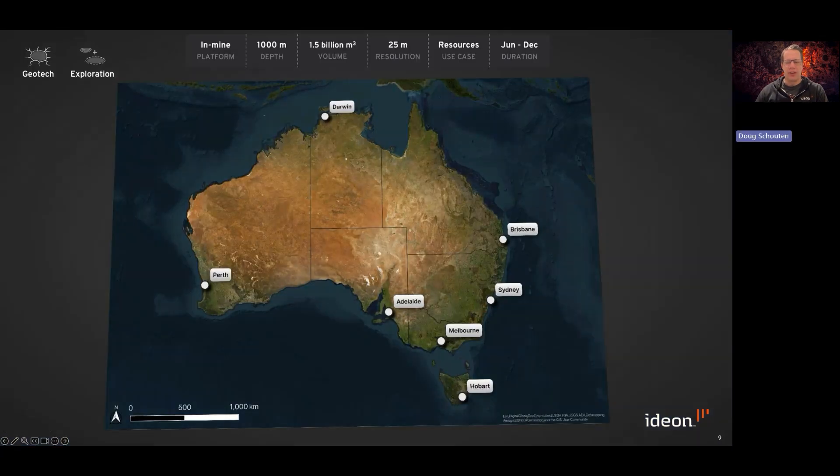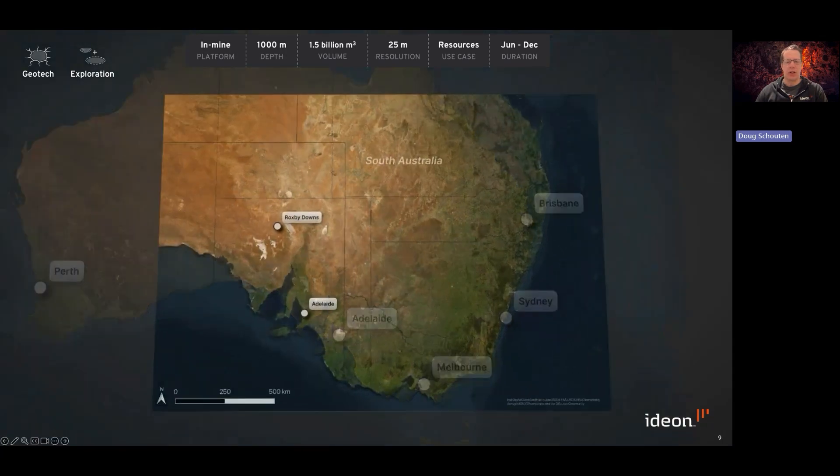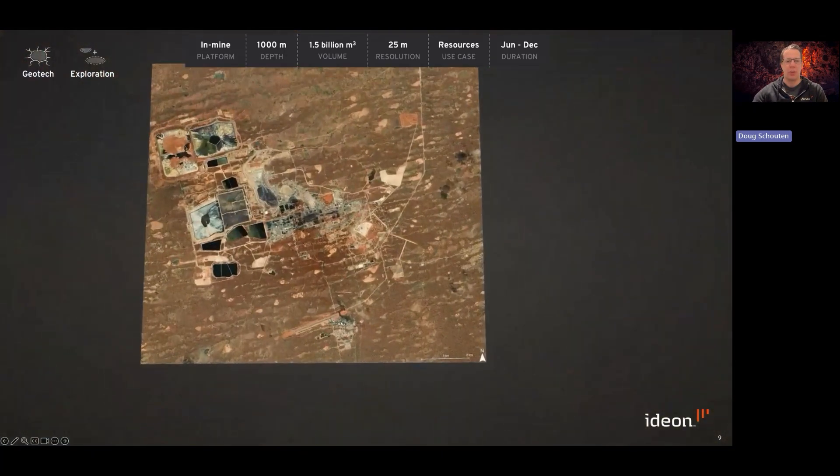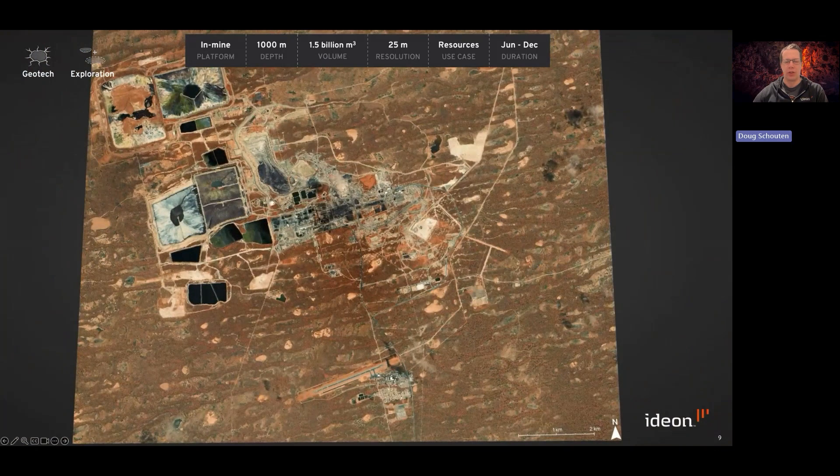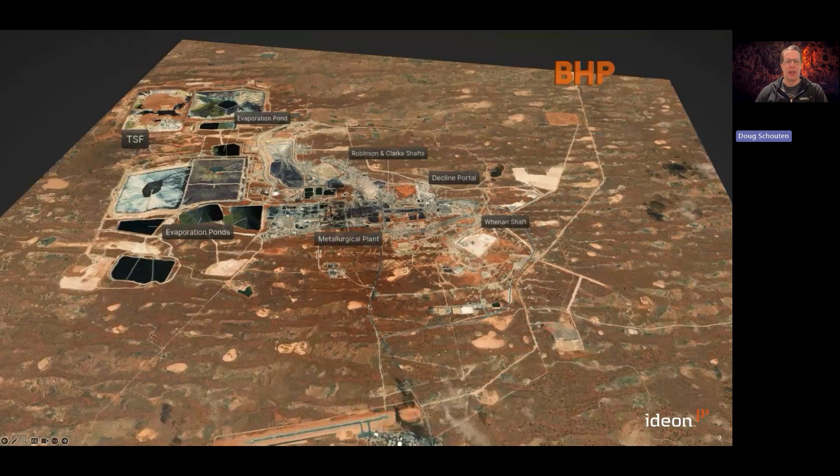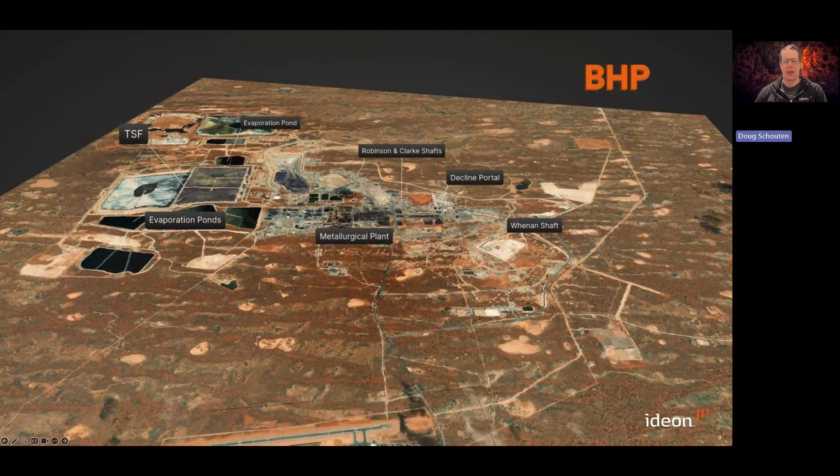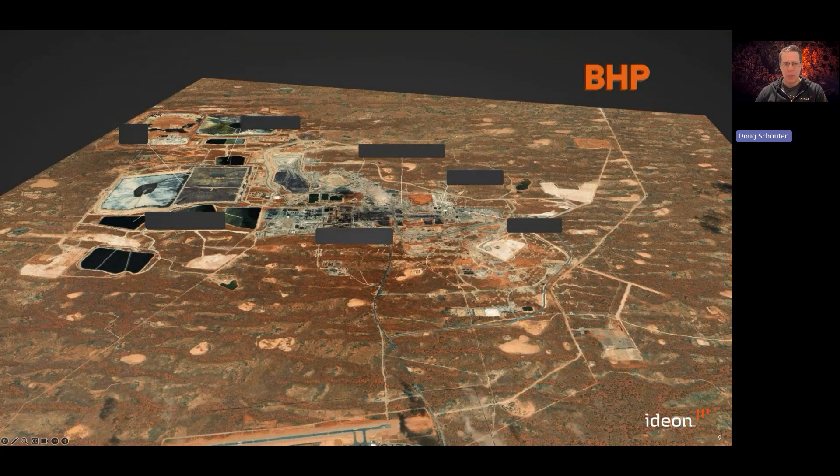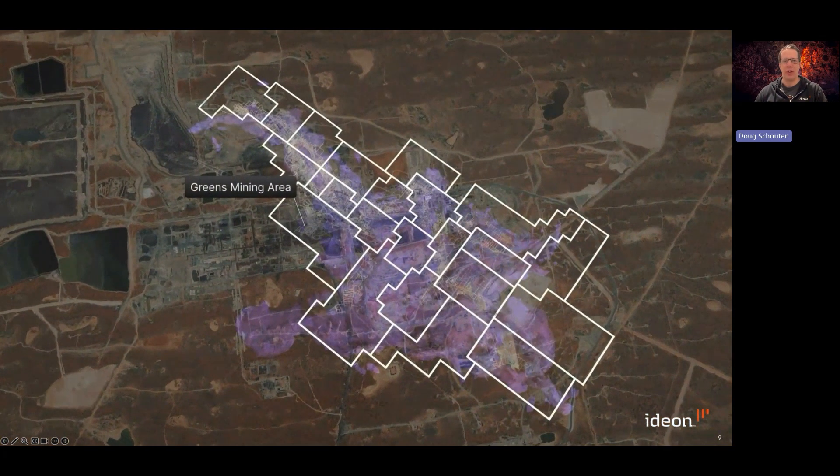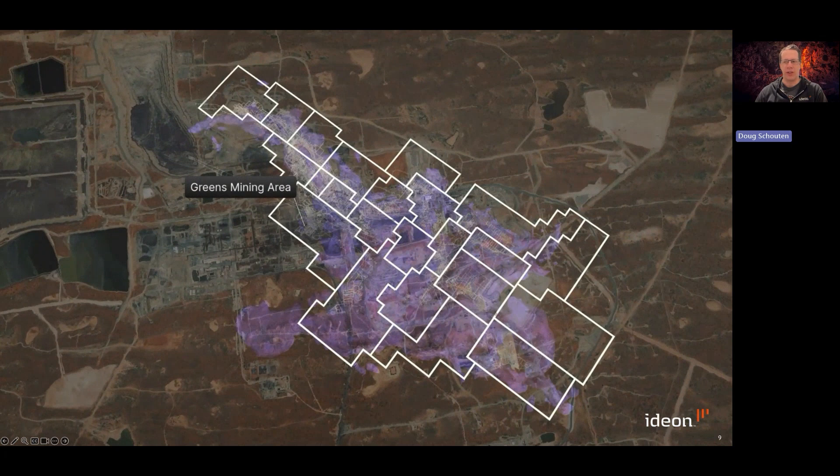So BHP operates the Olympic Dam mine, one of the largest underground metals mines in the world, located near Roxby Downs about 600 kilometers north of Adelaide. This world-class mine produces copper, gold, silver, and uranium. And the site is very large, extending over 10 kilometers and has more than 700 kilometers of underground workings.